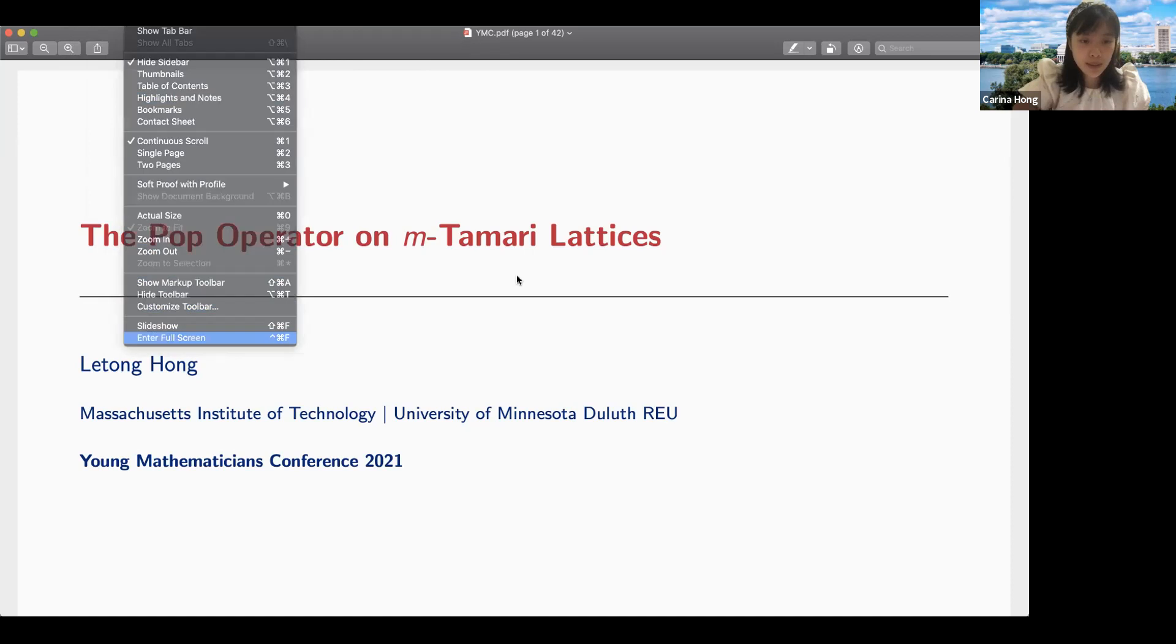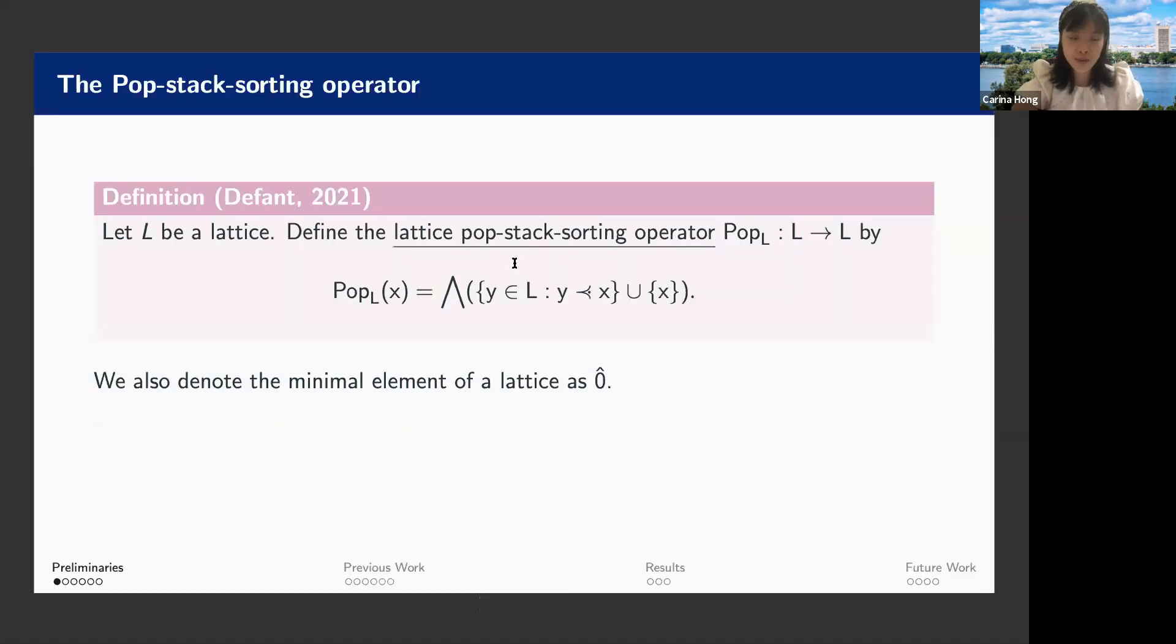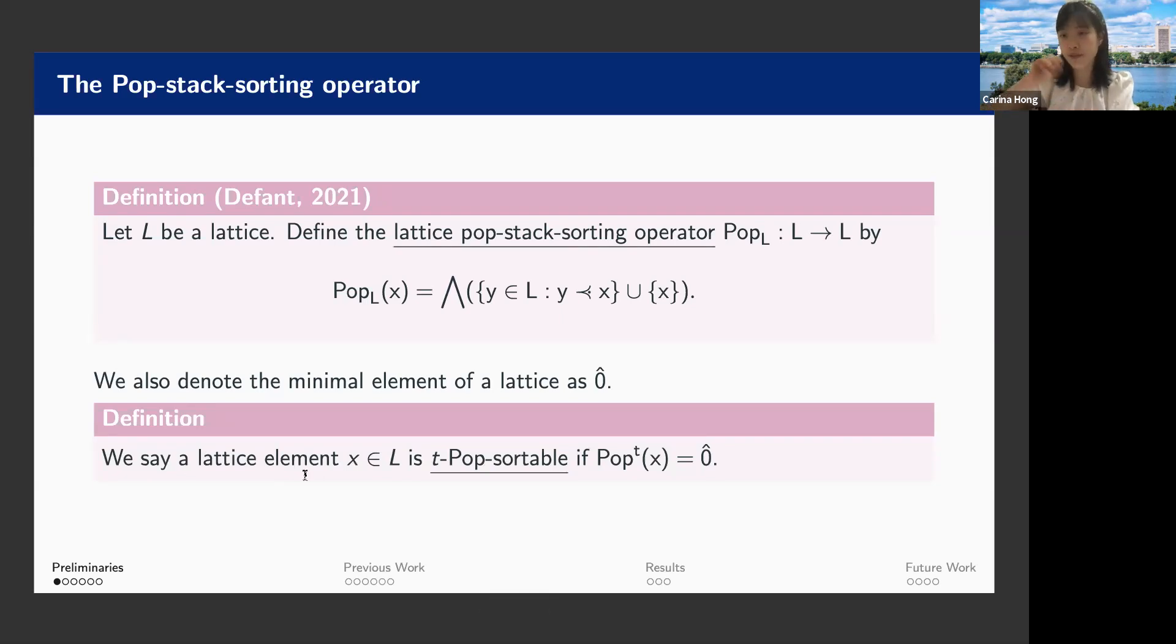So maybe let's start with the definition. What is a POP operator? A POP operator is an operator on lattice that sends a lattice element x to the meet of all the elements y that are covered by x and including x itself. So taking all these elements meet greatest lower bound. Why we union by x is just in case that x is the minimal element zero hat and it does not have any descendant. So we say a lattice element is T POP sortable if after T POPs it will get to the minimal element, including if it takes less than T times.